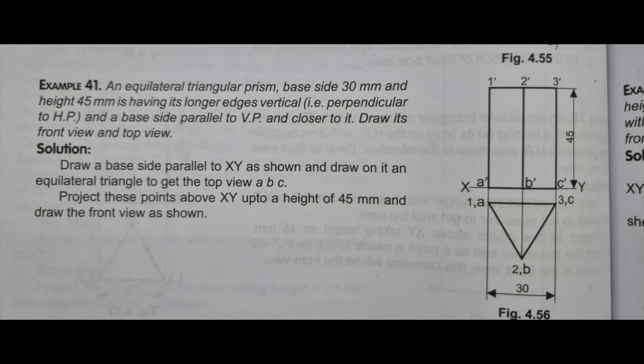Seventh sum: an equilateral triangular prism of base side 30mm and height 45mm is having its longer edges vertical — that is perpendicular to HP — and the base side parallel to VP and closer to it. Draw its front view and top view. These longer edges are the vertical ones perpendicular to HP, and the base side is parallel to VP.